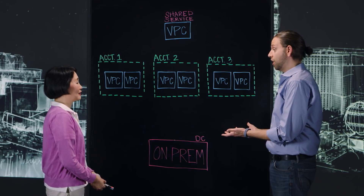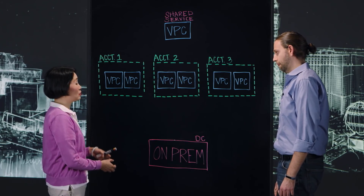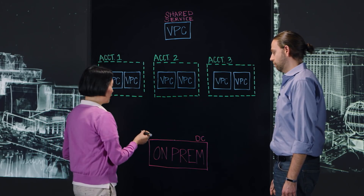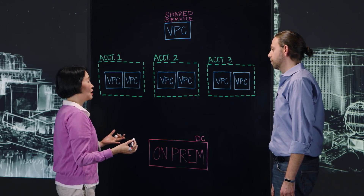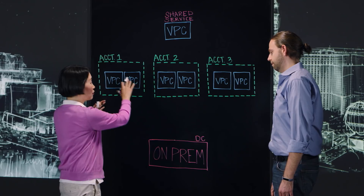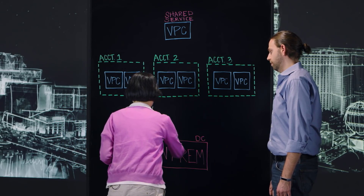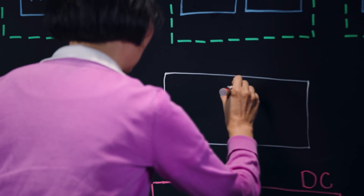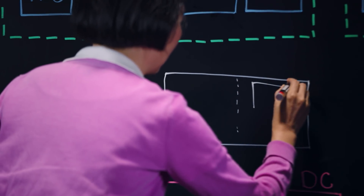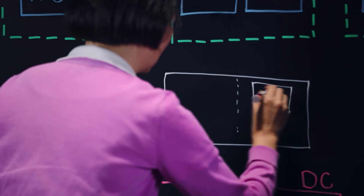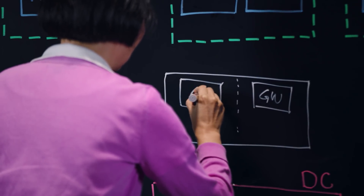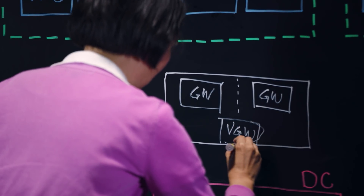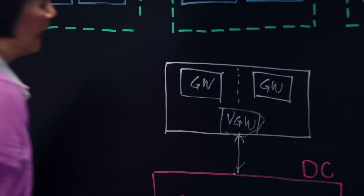We propose to divide the network into two parts: the transport layer and the service layer. The transport layer is represented by a transit VPC, and its purpose is to serve connectivity from spoke VPCs to on-premises. This will be a new VPC where you deploy Aviatrix gateways in two different AZs to create redundancy. It works with VGW — you can still have your Direct Connect to your on-premises — and in the transit VPC we run BGP between the transit gateway and the VGW.